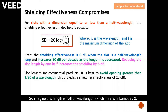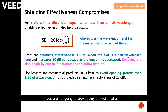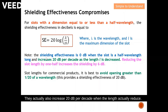So imagine this length is half of wavelength — that's lambda over 2. You can see the overall term becomes log(1), and log(1) is equal to 0, which means you don't actually provide any shielding effectiveness. In short, if your opening is more than half of a wavelength, you are not going to provide any protection at all — you may as well open up the shield entirely. The shielding effectiveness also increases at 20 dB per decade.